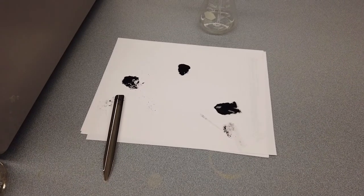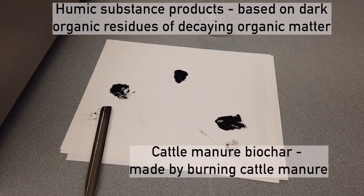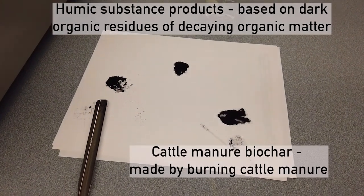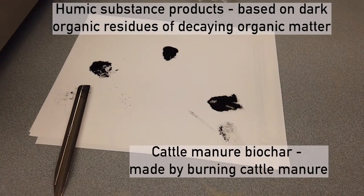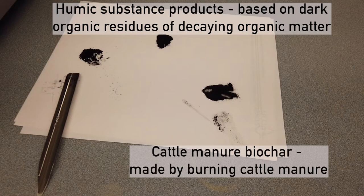The adsorbents I'm testing are two types of humic substance products and cattle manure biochar. Humic substances are dark organic residues of decaying organic matter. The two humic products are made from coal. Biochars are charcoal-like materials. Cattle manure biochar is made by burning cattle manure.